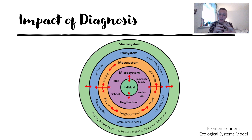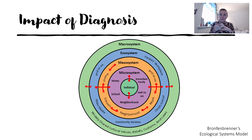To discuss the impact of diagnosis I've used Bronfenbrenner's ecological systems model. It suggests the individual is affected by everything around them: the individual with their own characteristics, thoughts, feelings, and behaviour; then the microsystem — your immediate environment, home, school, neighbourhood, immediate family; and the mesosystem — how all of that interacts.